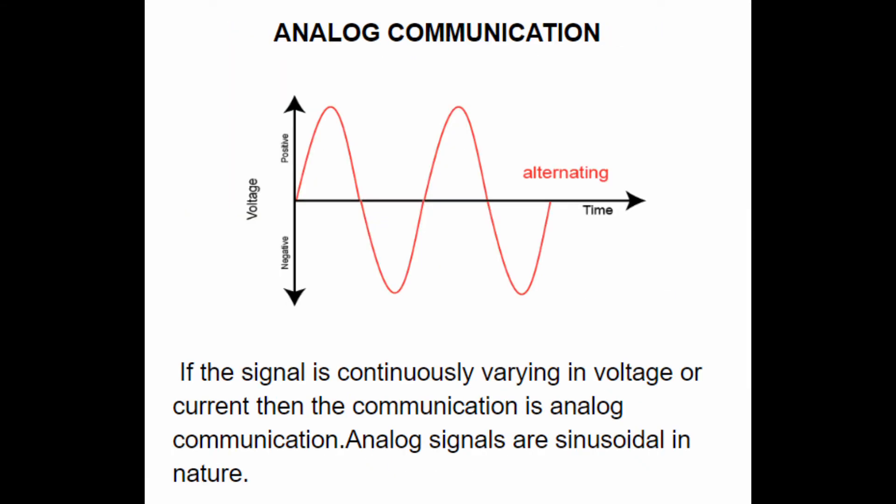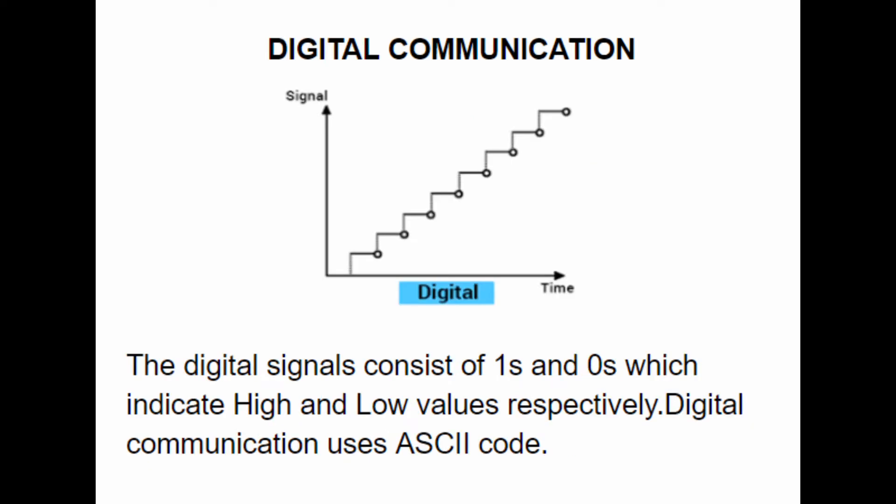Communication can be classified into two types: analog communication and digital communication. In analog communication, if the signal is continuously varying in voltage or current, then the communication is analog communication. Analog signals are sinusoidal in nature, whereas digital signals consist of ones and zeros which indicate high and low values respectively. Digital communication uses ASCII code.